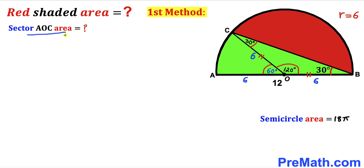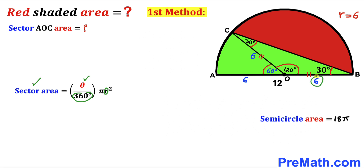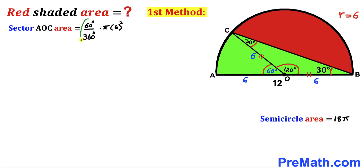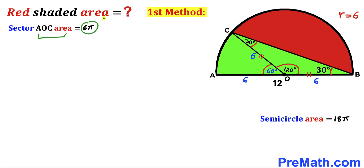Now we calculate the area of sector AOC. The sector area formula is: A = (θ/360°) × πr². With r = 6 and θ = 60°, the area of sector AOC is (60/360) × π × 6² = (1/6) × 36π = 6π square units.